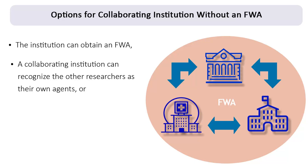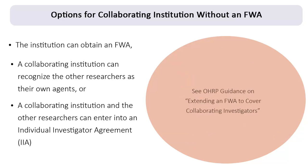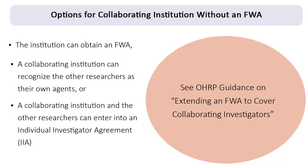Alternatively, under certain circumstances, an FWA-holding institution could enter into an individual investigator agreement to extend its FWA to cover the activities of the investigators at the institution without an FWA. This can also be done for investigators who are not affiliated with any institution, but who are conducting human subjects research activities as part of the multi-institutional research project. You can refer to the 2005 OHRP guidance on Extending an FWA to Cover Collaborating Investigators, found on OHRP's website, for more information.